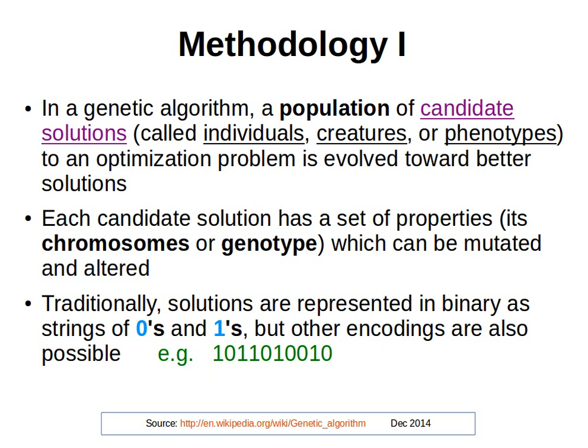Welcome back. In this video, we'll have a look at the idea behind genetic algorithms, how they work, and how we actually try to find a solution. In a genetic algorithm, we start with a population of candidate solutions or possible solutions. Remember from the last video, we talked about the search space, and we said that we do not know the values of all possible solutions, but we only know some of them — a subset of those solutions. So this is our population: that subset of possible solutions. We start with these candidate solutions, called individuals, creatures, or phenotypes, and then we evolve them towards better solutions.